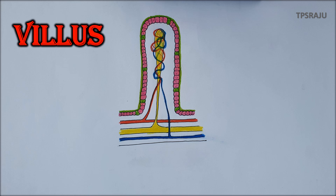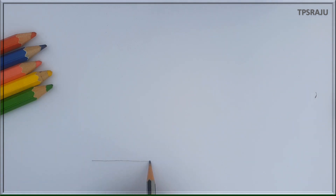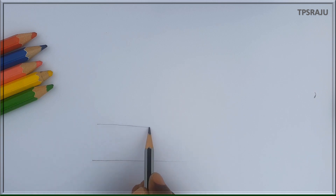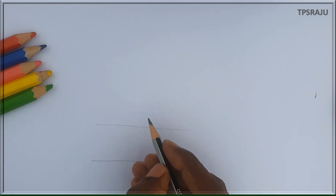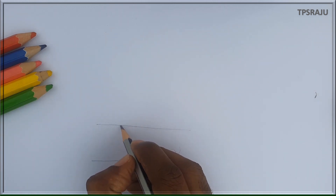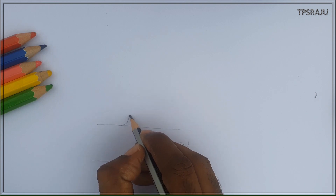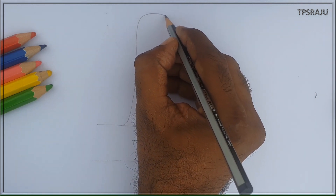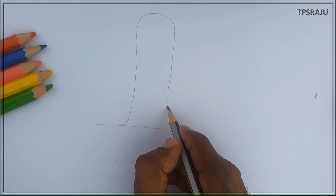The inner surface of the small intestine contains thousands of finger-like projections called villi. This is the wall of small intestine. This is a finger-like projection formed from the intestinal wall, called villus.